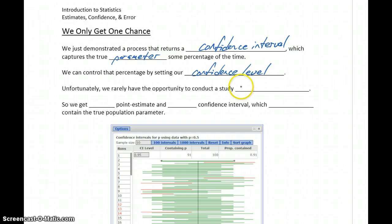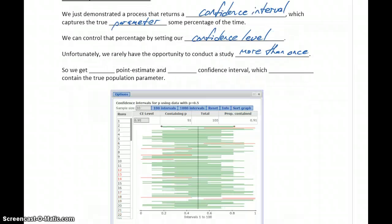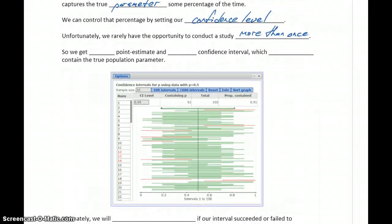Unfortunately, in the real world, we rarely have the opportunity to conduct a study more than once. We can't go out and survey people, and then survey a different random group of people. We usually just get that one opportunity. So we only get one point estimate and one confidence interval, which may or may not capture that true population parameter.